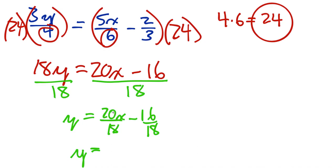20 and 18 in this x term are both divisible by 2, so I get 10x over 9. This 16 over 18 is also divisible by 2, so I'm left with 8/9. I get y equals 10x over 9 minus 8/9.